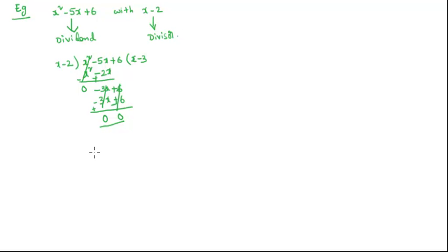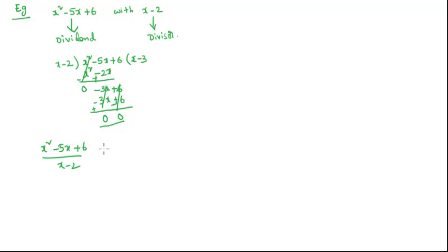Stop the division. Therefore, we can conclude that by dividing x squared minus 5x plus 6 with x minus 2, we get the quotient x minus 3.